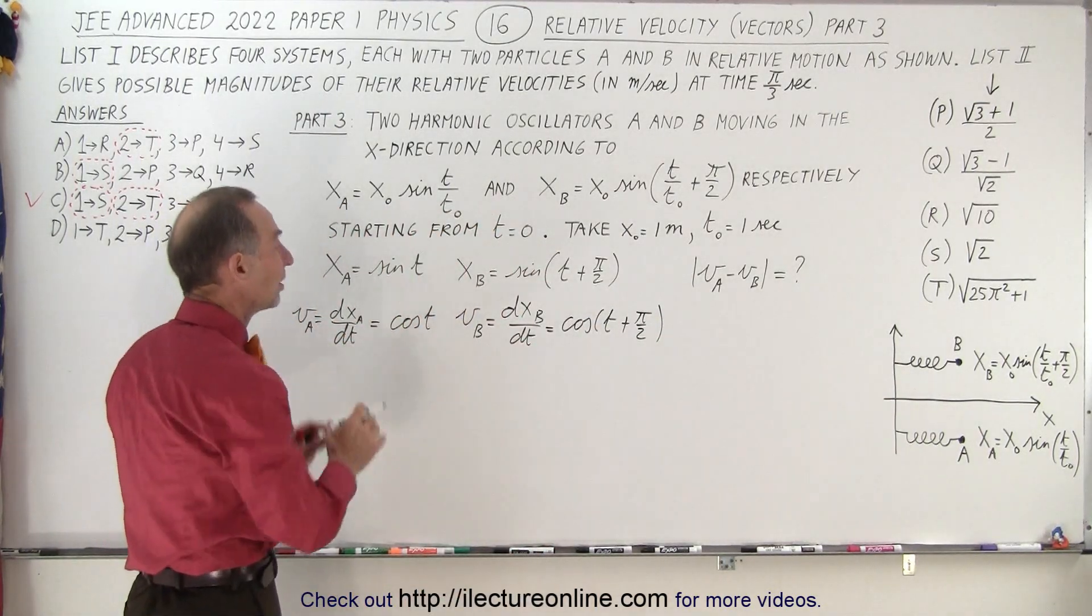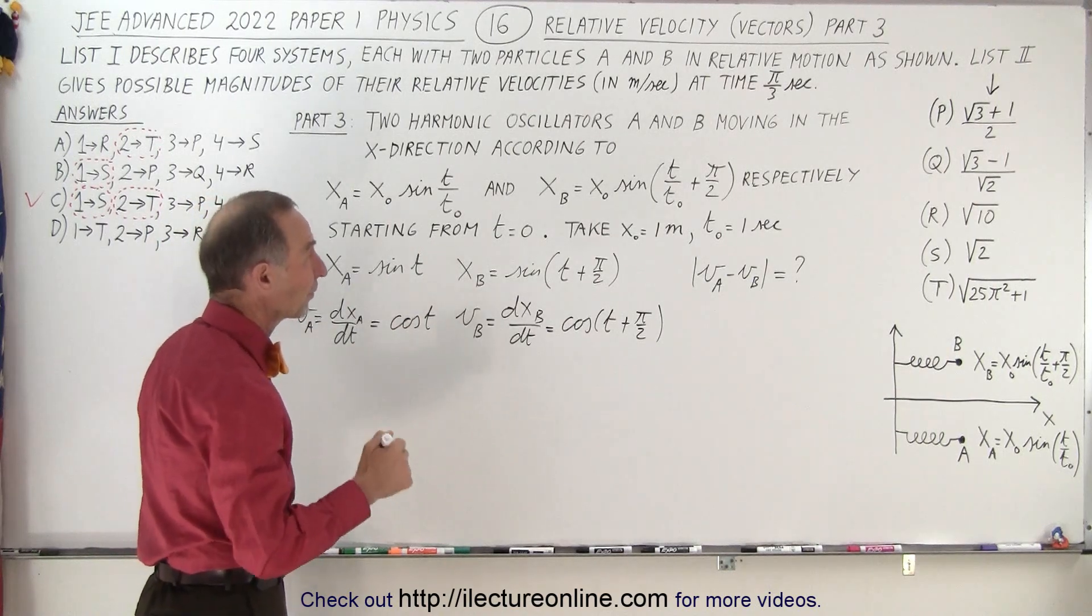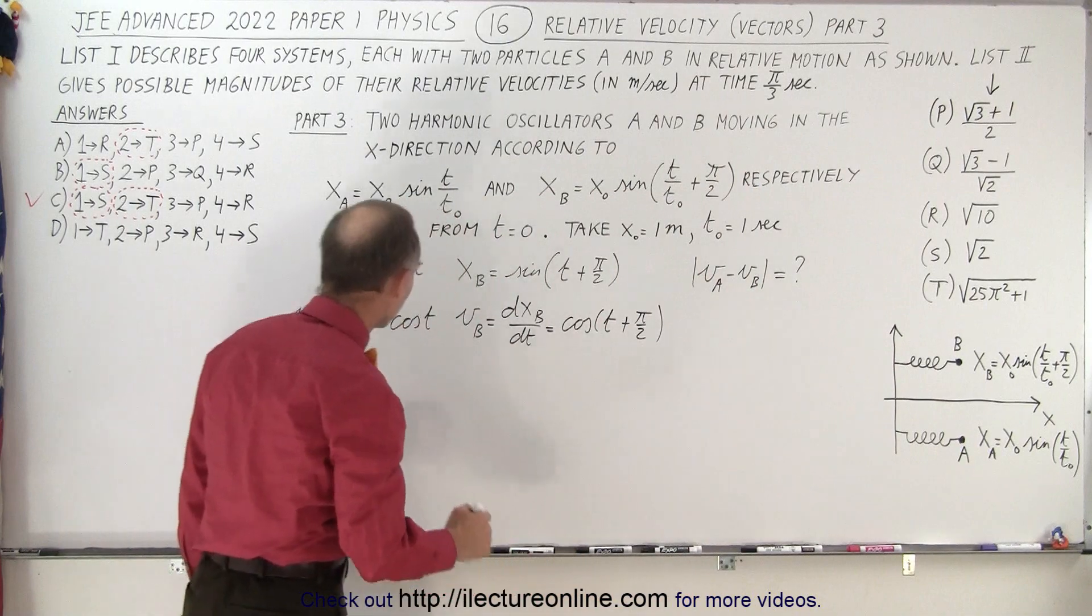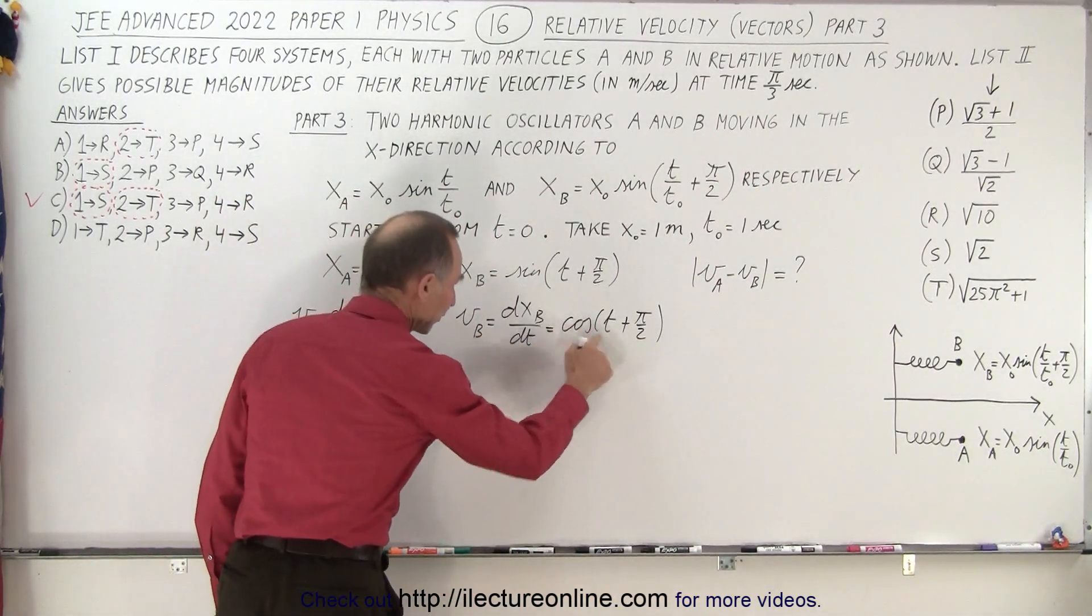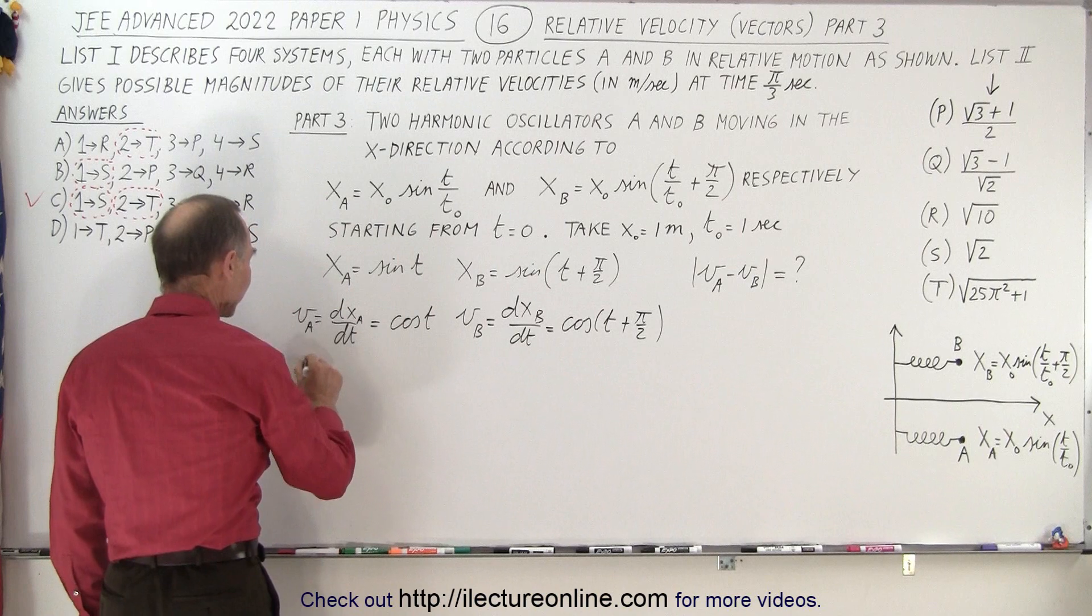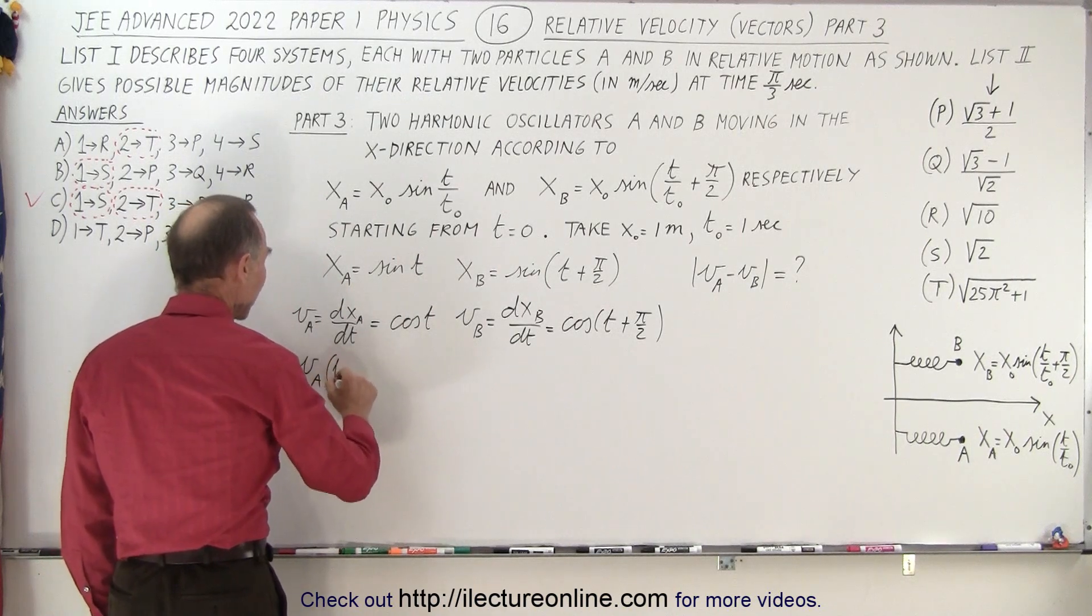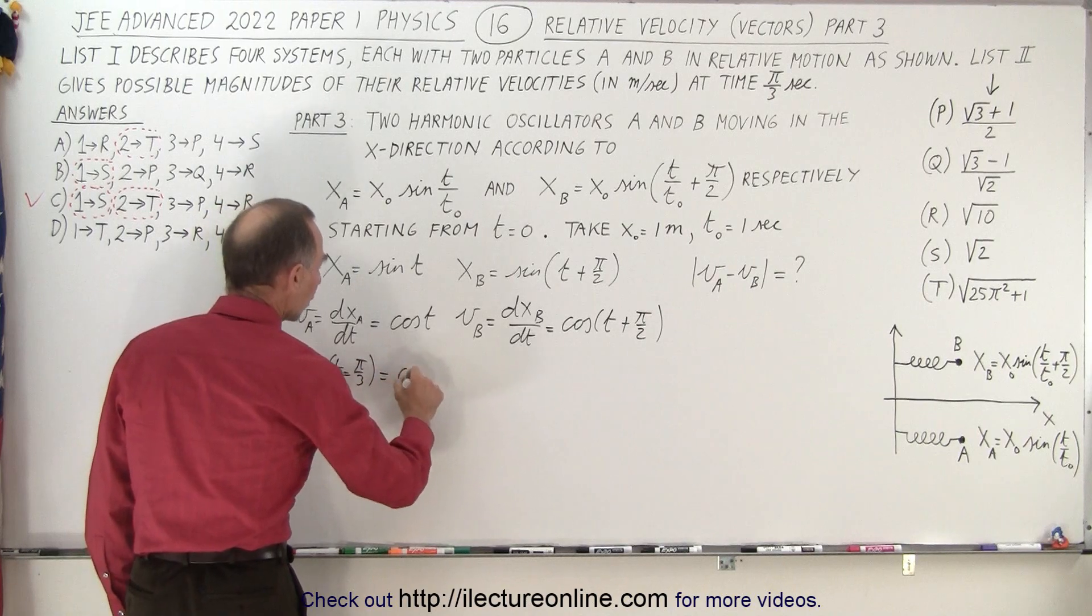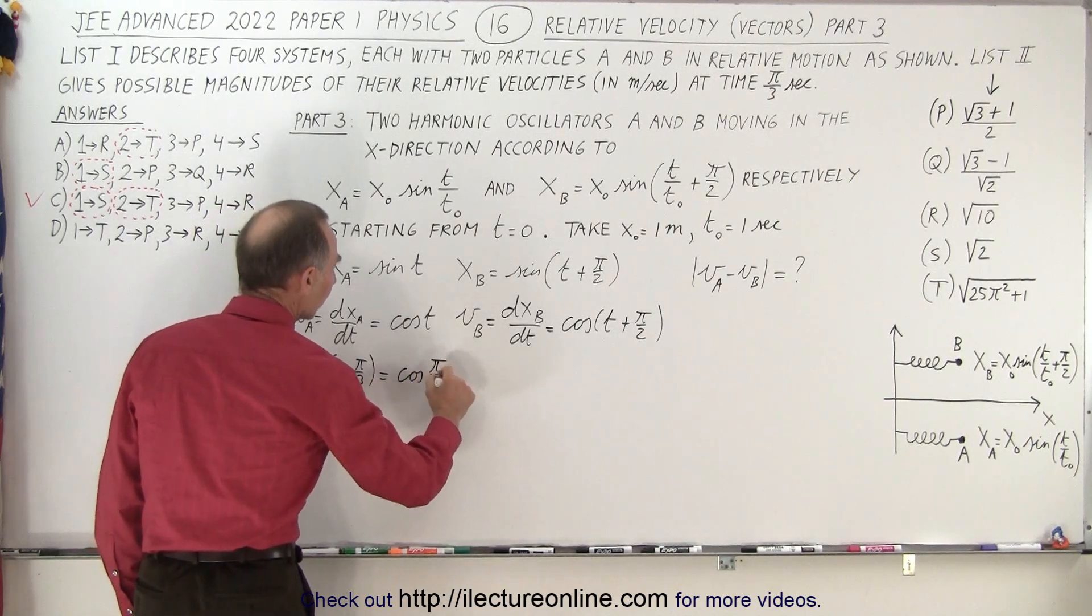All right, so now we have the velocities. Now we need to take the difference of the velocity when time is pi over three. So what we're going to do is plug in pi over three over here. So that means that v sub a, when time equals pi over three is equal to the cosine of pi over three.